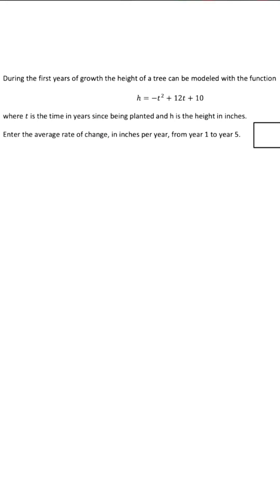They give us a quadratic function, and they want us to determine the rate of change in inches per year from year 1 to 5. So for us to do this, it's kind of a two-step process.